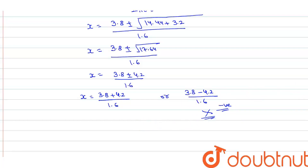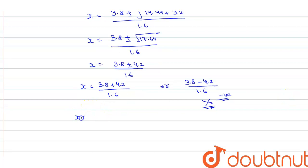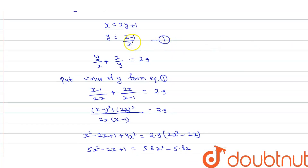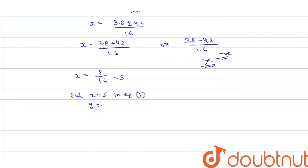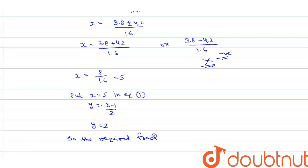The negative value is neglected because the question specifies a positive fraction. So x equal to (3.8 plus 4.2) divided by 1.6, giving x equal to 5. Putting x equal to 5 in equation 1: y equal to (x minus 1) / 2 equal to (5 minus 1) / 2 equal to 4/2 equal to 2. So the required fraction is y upon x equal to 2 upon 5. This is the answer.